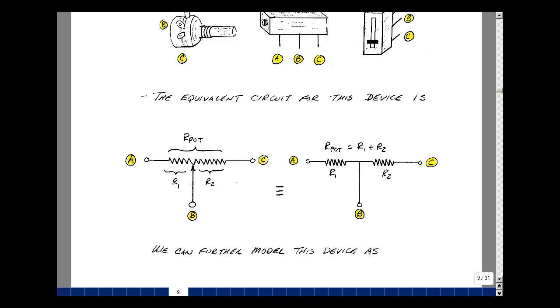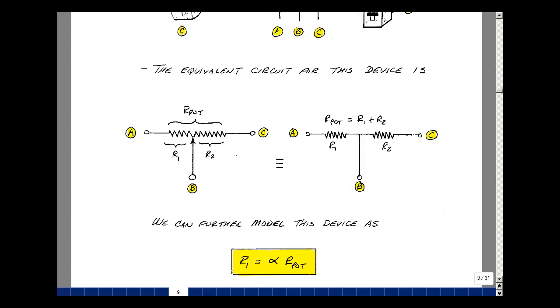Now, we could write R1 as a fraction of the total resistance of the pot, where alpha is a number between 0 and 1. On the pots in the middle, we have half the value of the total potentiometer resistance. If we're a quarter of the way, then we'd have a quarter of the resistance.